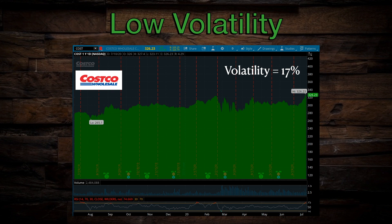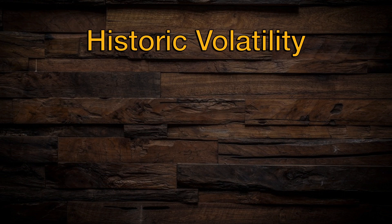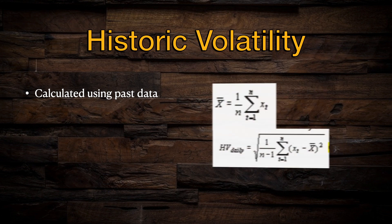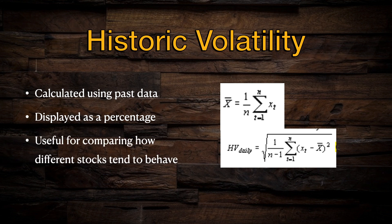The type of volatility I've been describing so far is more specifically known as historic volatility. This is something that we can calculate by looking at past data. The equations for historic volatility look like this, but thanks to technology and our trading platforms, we don't actually have to understand how the equation works to incorporate volatility into our trading strategies. All you need to know is that this equation spits out a percentage, and the higher that percentage is, the more volatile a stock has been historically. Historic volatility can be a useful number to look at if you want to compare a few different stocks and get an idea of how quickly and how often they tend to move in comparison with one another.